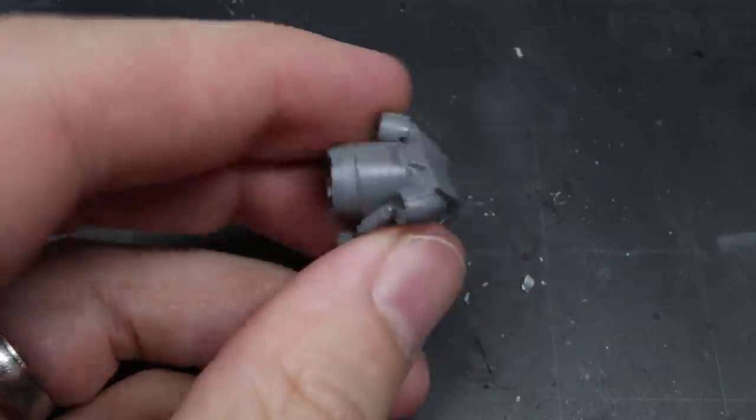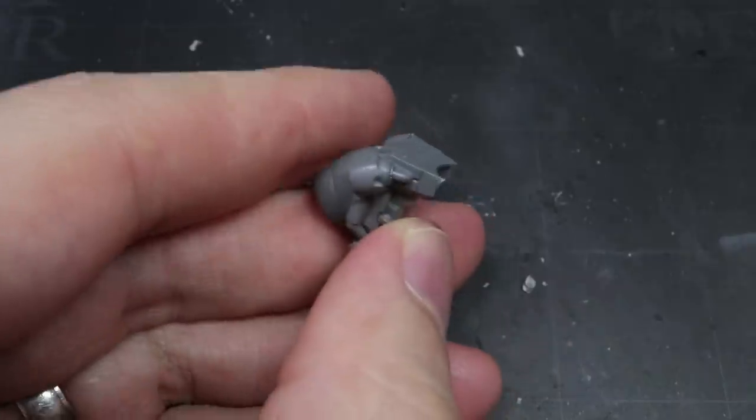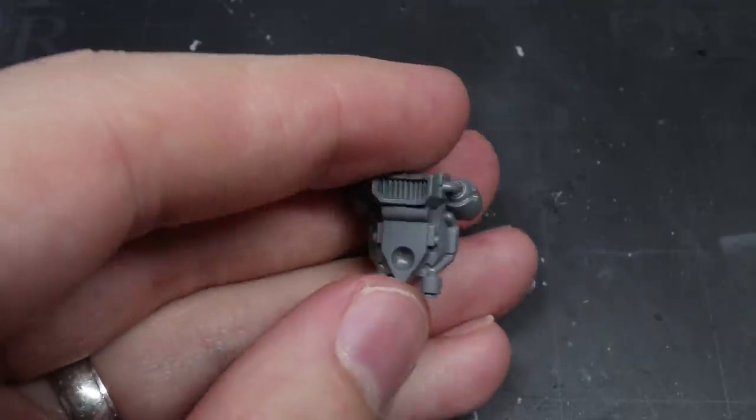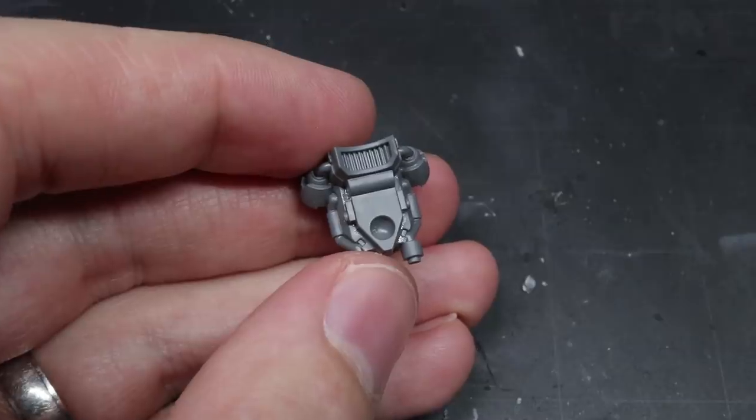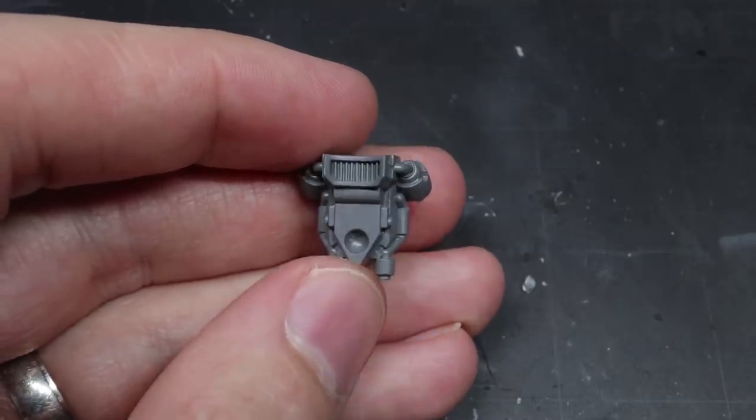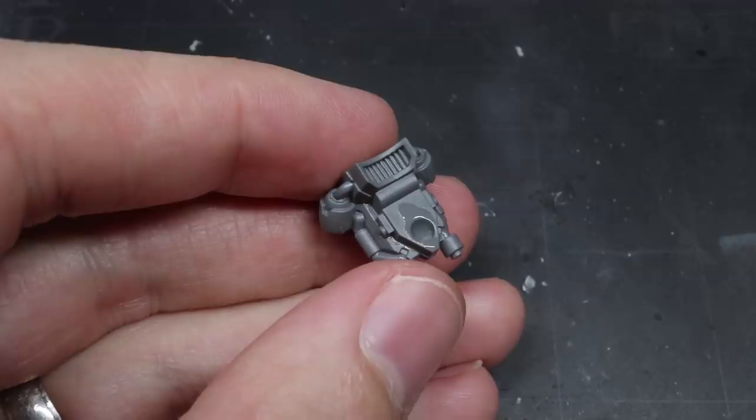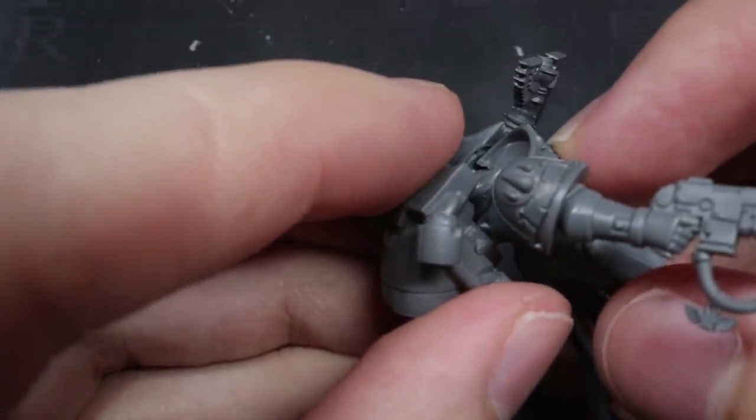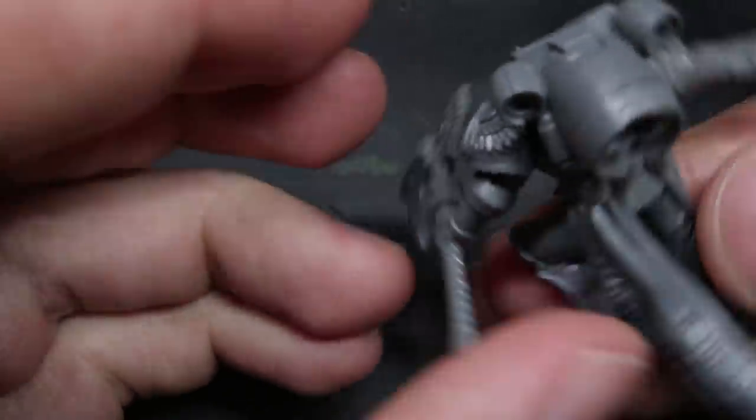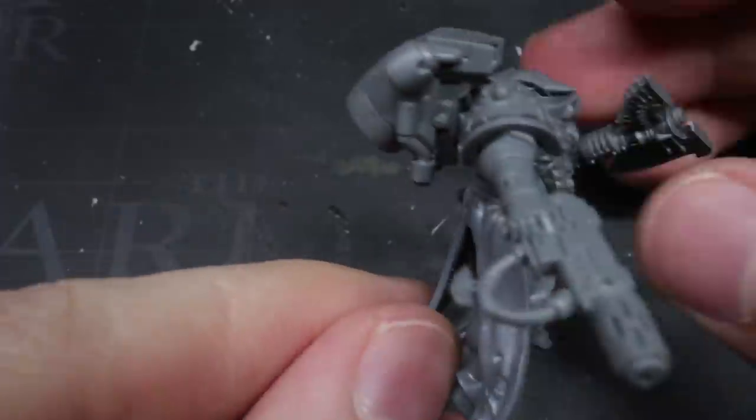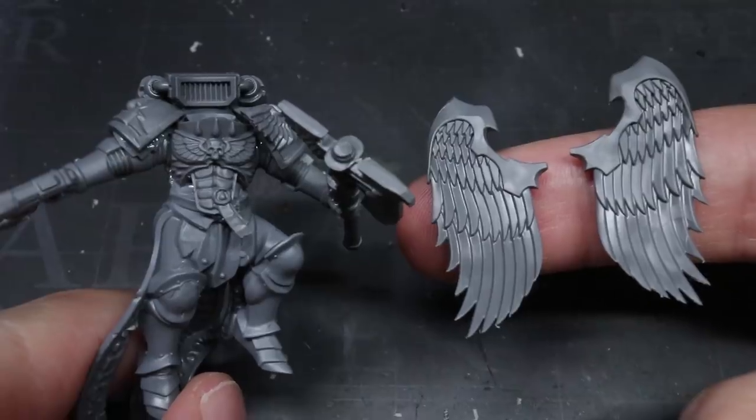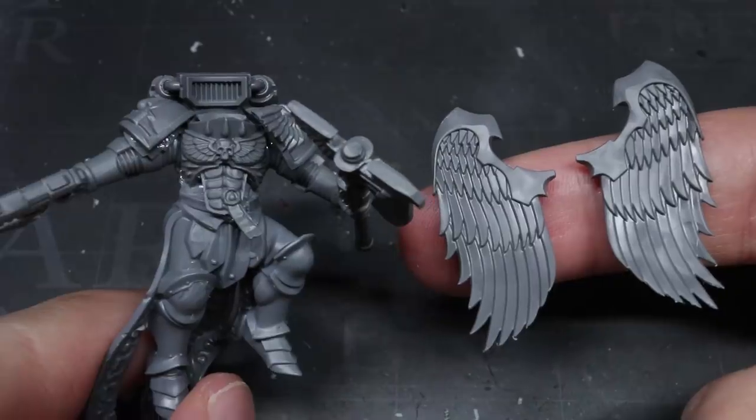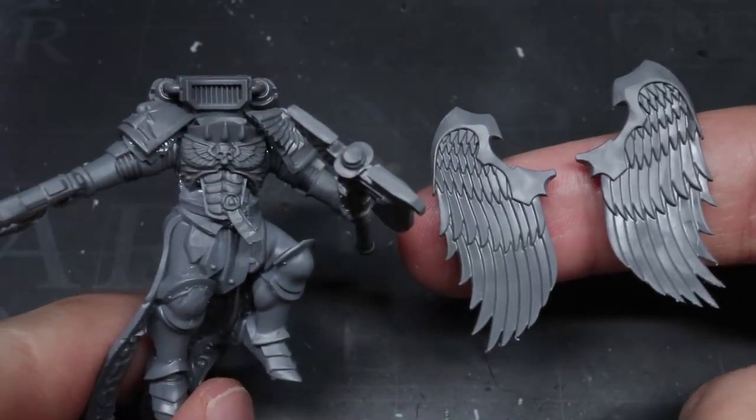The original Dante model comes equipped with a standard double vented jump pack. However, the sanguinary guard come with these single vent packs instead and it was one of these that I decided to attach to the back of Dante. Luckily, the prosecutor torso already comes with a flat area to attach his wings to and this made an excellent anchor point in which to add the jump pack. I was also going to attach the wings that came with the jump pack. However, as these were likely to get in the way during the painting step, I decided to keep these separate for the time being.